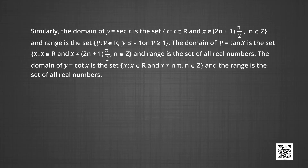The domain of y = tan x is the set of x such that x belongs to ℝ and x is not equal to (2n+1)π/2, where n belongs to integers, and the range is the set of all real numbers. The domain of y = cot x is the set of x such that x belongs to ℝ and x is not equal to nπ, where n belongs to ℤ, and the range is the set of all real numbers.